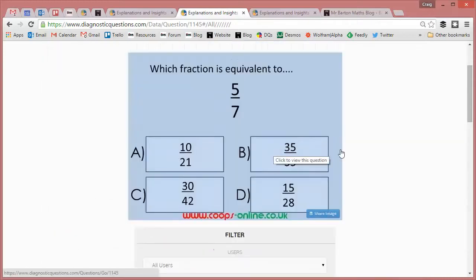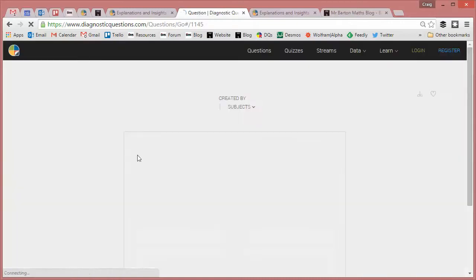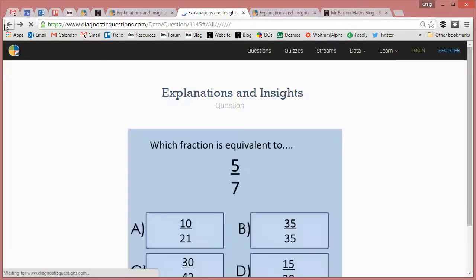There's a misconception here that I would never have dreamed of, that students were aware there's something to do with seven times five. Perhaps they're getting that from making the denominator the same for adding fractions, maybe something related to that, but now all of a sudden they're doing it for simplifying fractions as well.